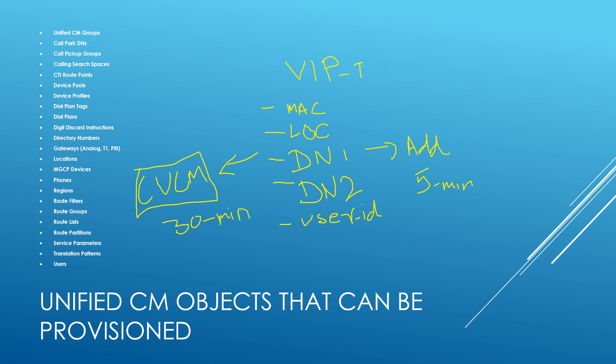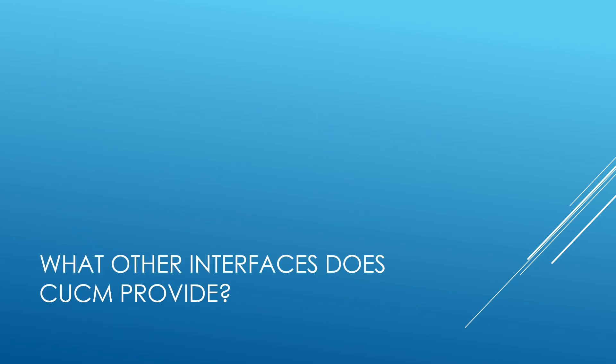If you want to see how this works, I'll be showing you how to do this provisioning using third-party clients that are available. I will show how to create a phone, how to create a partition, how to create a CSS, and how to associate a directory number with a phone. Stay tuned — this week I'll probably be showing how the AXL interface works in real time with your Cisco Unified Communications Manager.